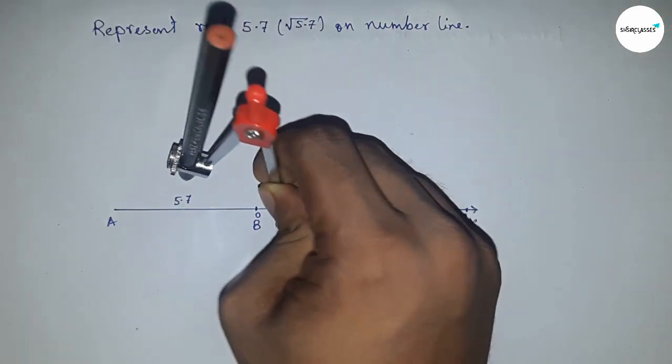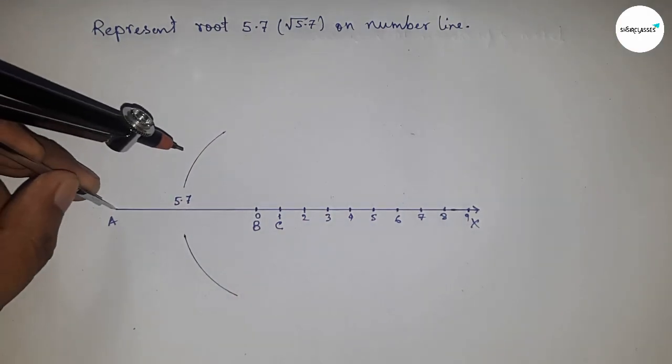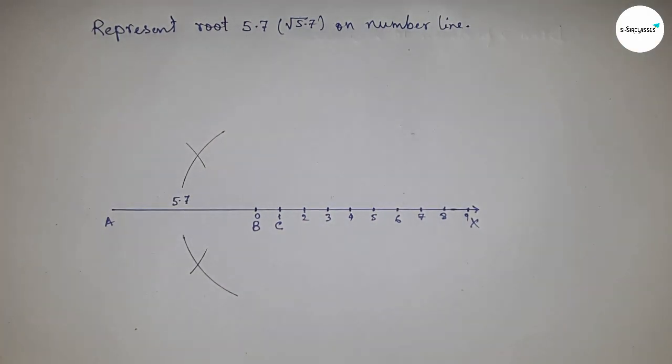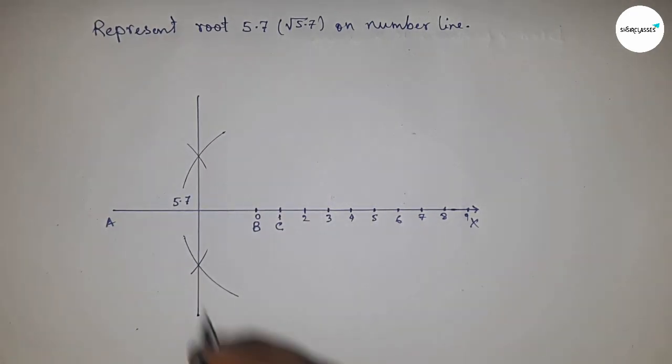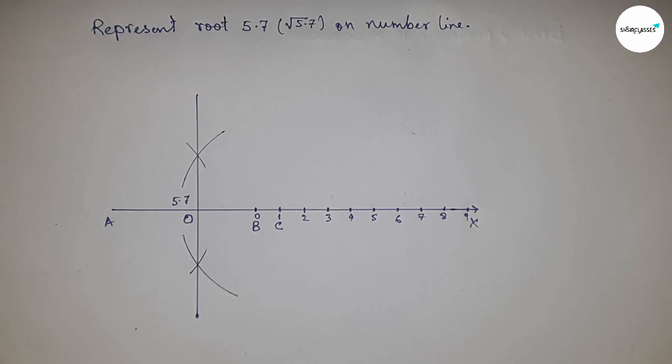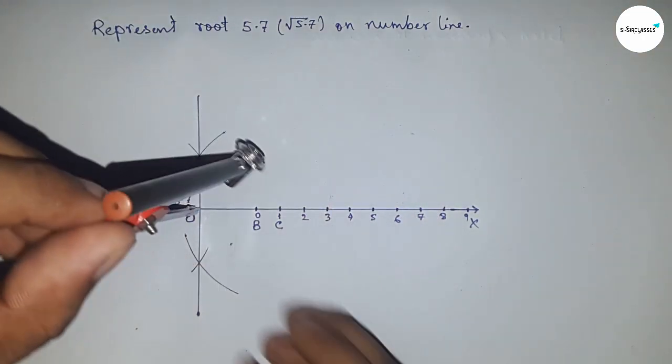Taking greater than half of AC and drawing arcs, we put the compass here with the same length and cut the arcs. Next, we join this, which meets at point O.